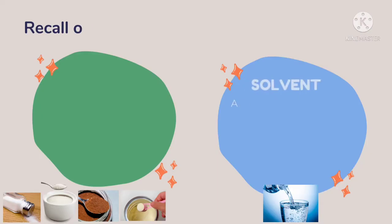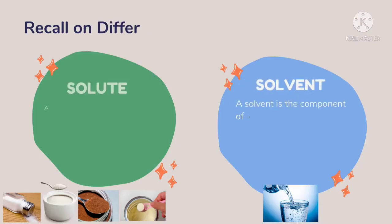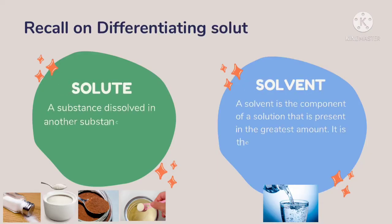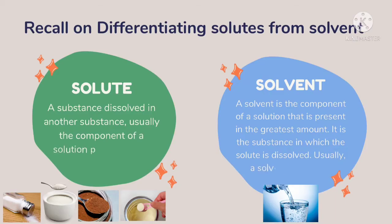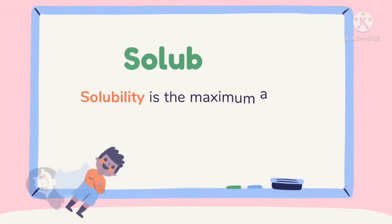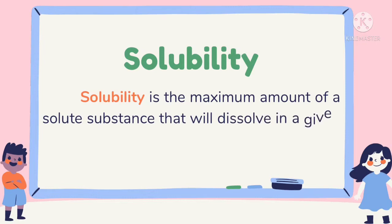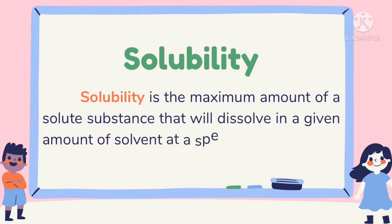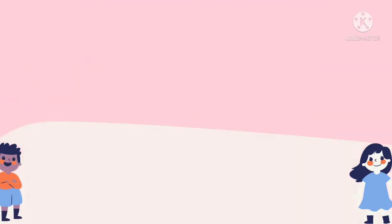Let's have a short review on last week's topic: Differentiating Solutes from Solvents. Solute is a substance dissolved in another substance, while solvent is the substance in which the solute is dissolved. Our next lesson is Solubility — it is the maximum amount of a solute that will dissolve in a given amount of solvent at a specific temperature.